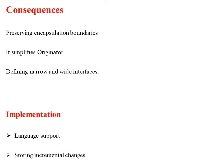The second consequence is simplifying the originator. The originator keeps versions of internal state that clients may request, creating a storage management burden on the originator. By having clients manage the state they ask for, it simplifies the originator and keeps clients from having to notify originators when they are done. Note that this is also an implementation technique — by simplifying the originator, we can implement this pattern.